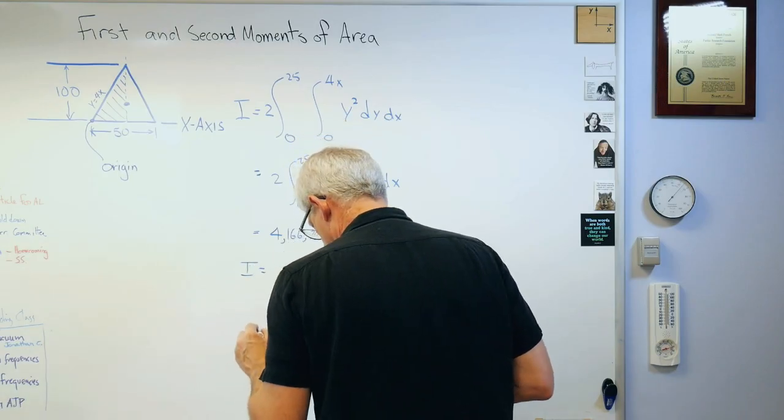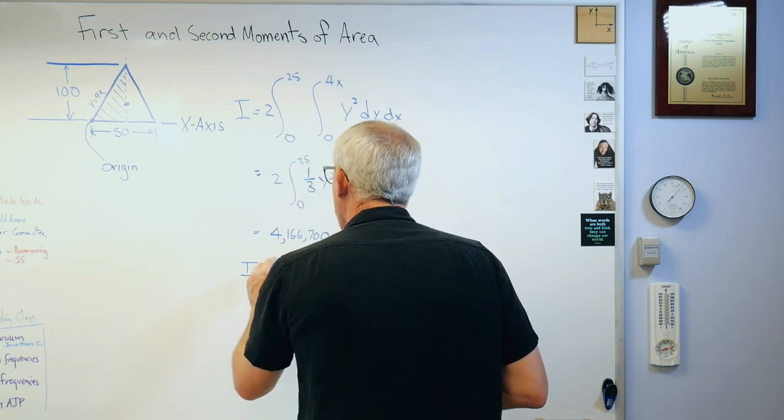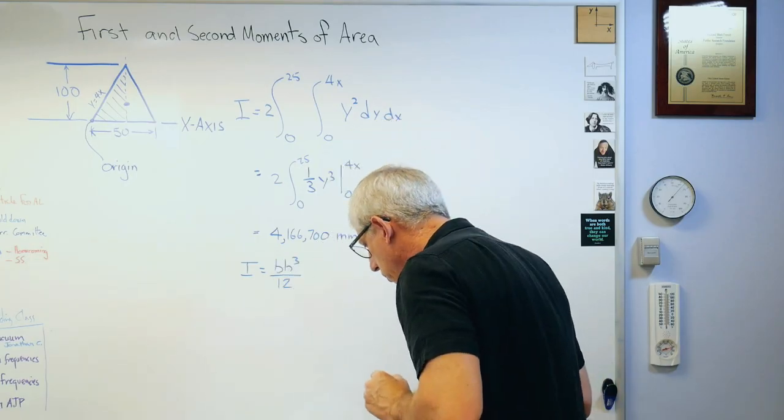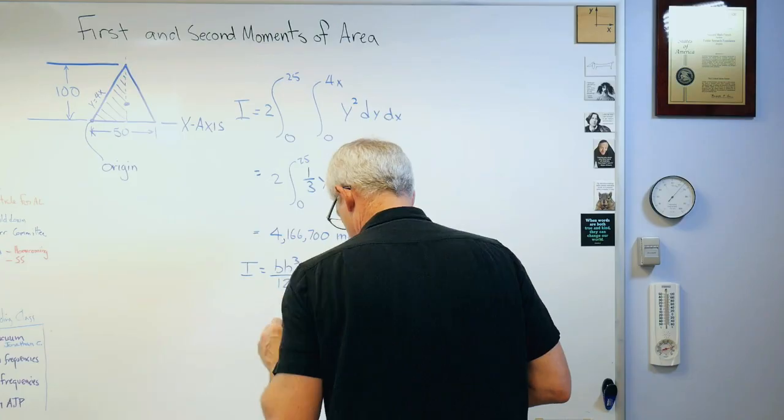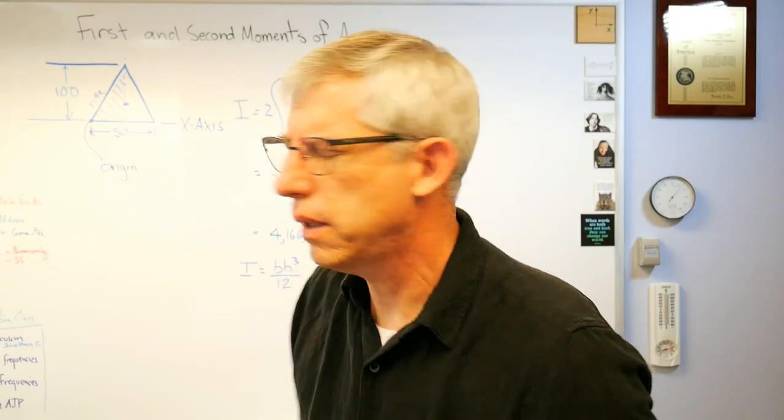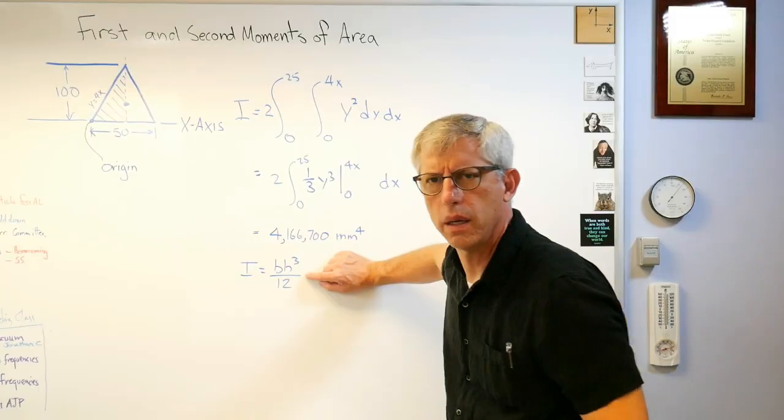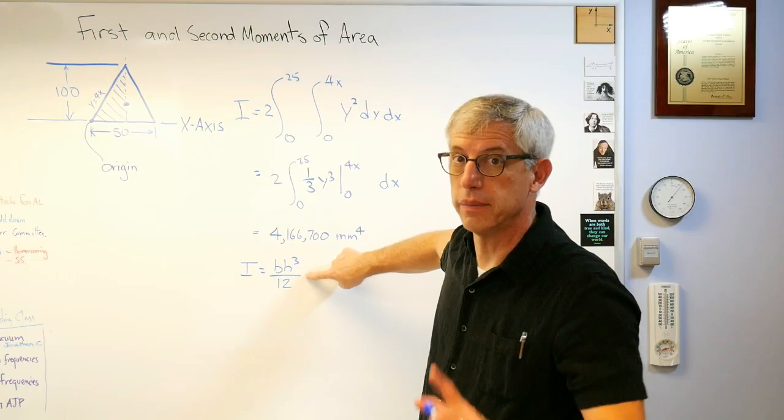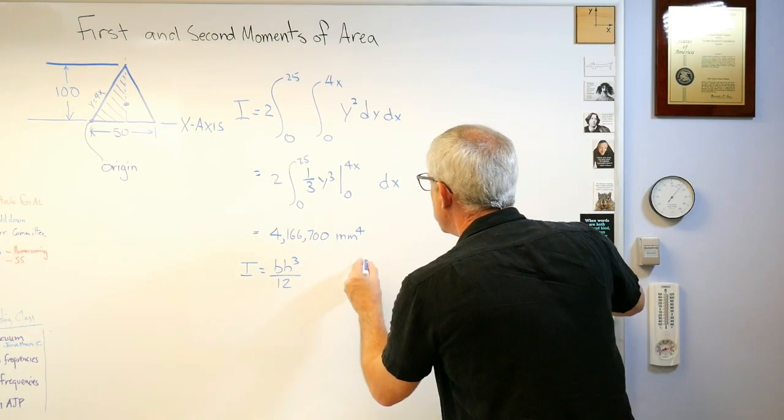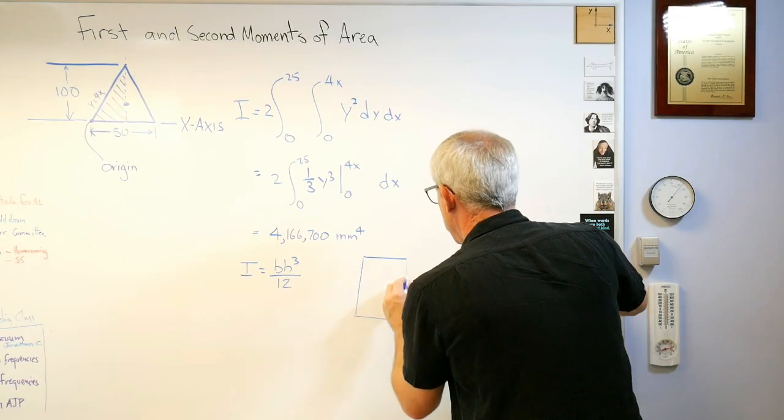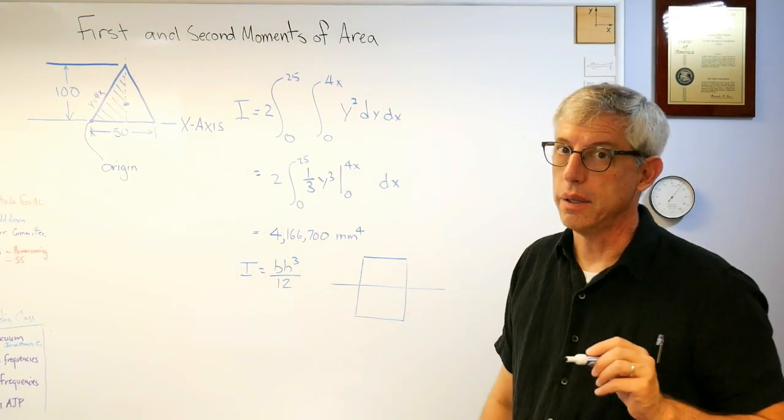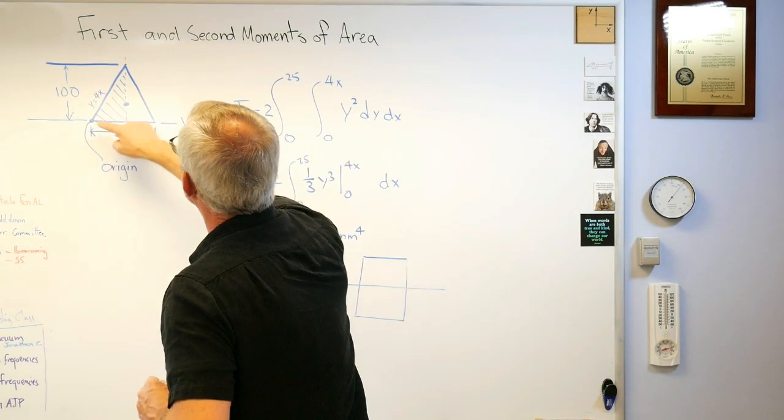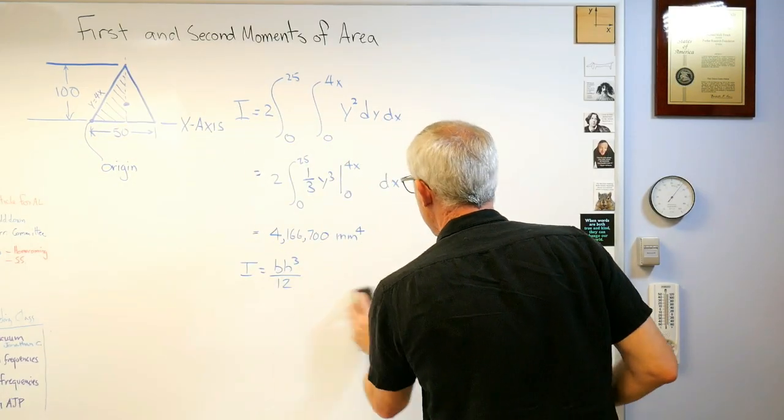Now we know from tables on the internet and all kinds of places that the area moment of inertia of a triangle is bh cubed over 12. Wait a minute, isn't that the area moment of inertia of a rectangle? It is, but it's the area moment of inertia of a rectangle measured from the center of the rectangle, not from the bottom.